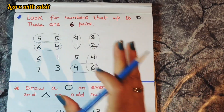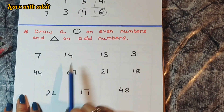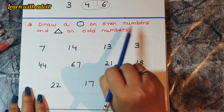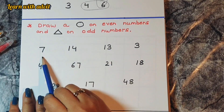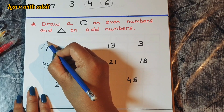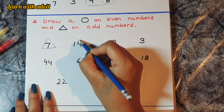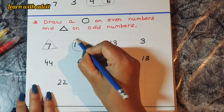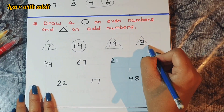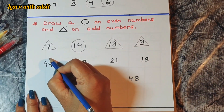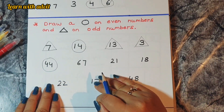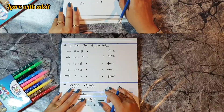Here I have given an exercise for even and odd numbers: draw a circle on even numbers and a triangle on odd numbers. Kids need to check carefully — 7 is odd so draw a triangle, 14 is even so draw a circle, 13 is odd so draw a triangle, 44 is even so draw a circle, and so on.